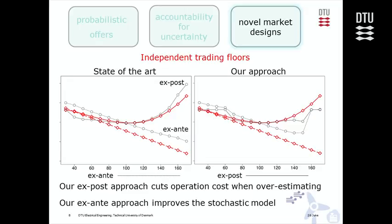The red line is the operation cost for the conventional model with independent trading floors. On the left we have the state of the art, and on the right we have our approach based on stochastic optimization and bi-level programming.